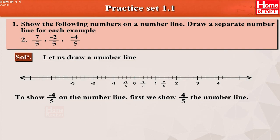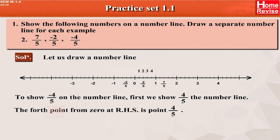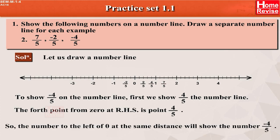Now, to show minus 4 upon 5 on the number line, first show 4 upon 5 on the number line. The 4th point from 0 at the right hand side is 4 upon 5. So, the number to the left of 0 at the same distance will show the number minus 4 upon 5.